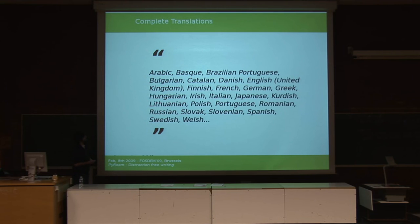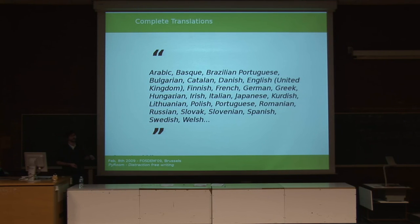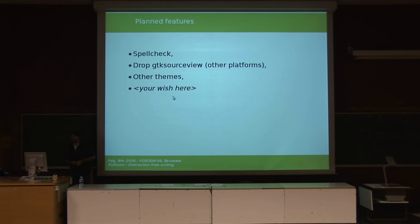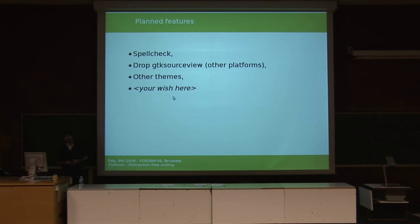It's translated into many languages — we even got Welsh. Planned features include spell check, which would be very handy for writers in their own language. We also want to drop GTK Source View because it prevents full compatibility with Windows and Mac OSX, and we want to port PyRoom to those platforms. More themes are also planned — just file a wish report on Launchpad saying what you'd like and we'll consider it.